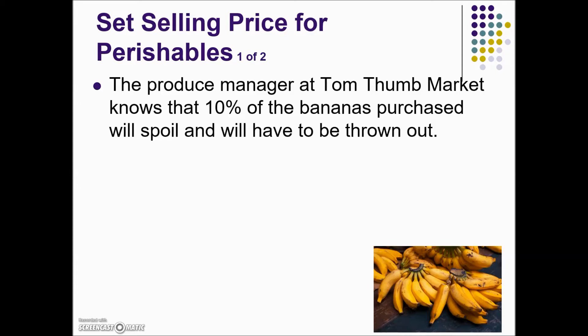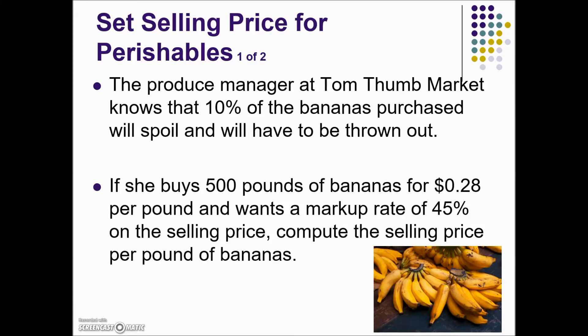The produce manager at Tom Thumb Market knows that 10% of bananas purchased will spoil and will have to be thrown out — an observation they would know from experience. If she buys 500 pounds of bananas for 28 cents per pound and wants a markup rate of 45% on the selling price, compute the selling price per pound of bananas.